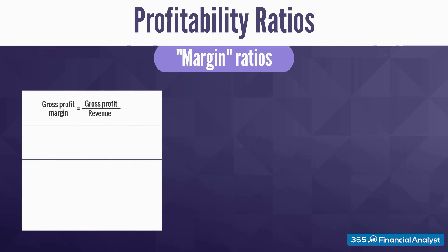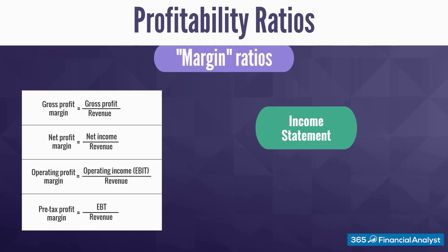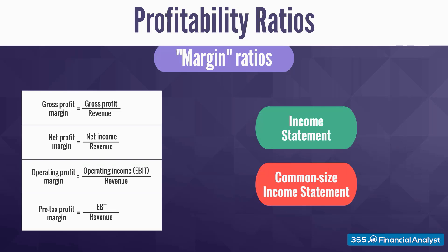The Gross Profit Margin, or Return on Sales, is calculated as Gross Profit — totalling Revenue minus Cost of Goods Sold — divided by Revenue. Similarly, the Net Profit Margin equals Net Income divided by Revenue. It is not unusual for Financial Analysts to estimate an Operating Profit Margin or even a Pre-Tax Profit Margin as well. All you need to calculate them is the Income Statement of a company. You have all these ratios readily available in any Common Size Income Statement, which presents each line item as a percentage of total revenue.